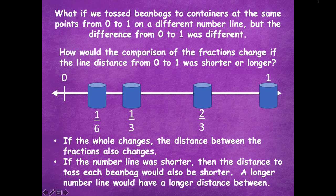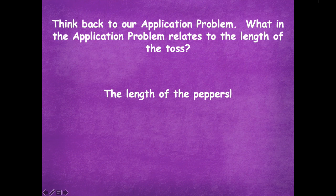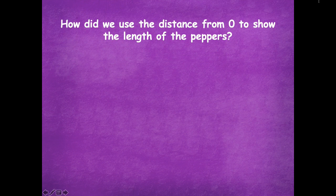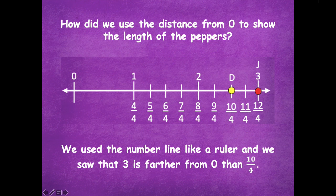Those are good points. Let's think back to our application problem. What in the application problem relates to the length of the toss? We were talking about the length of the peppers — we could think about that as the same as our tossing of the beanbags. We just used a number line to model both. We used the number line like a ruler, and we saw that three is farther from zero than ten-fourths.